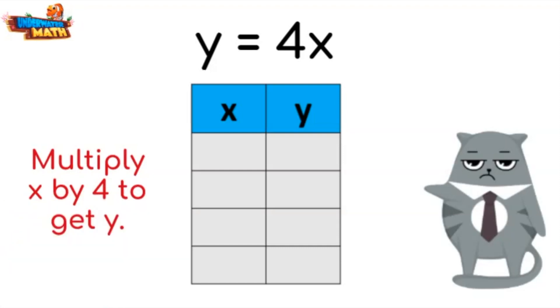Can you show me? Sure, if we have 1 in the x column we multiply by 4 to get the value of the y column, 4. Oh, so if I had 2 in the x column I would multiply by 4 to get the y column, it would be 8. Good job grumpy kitty.